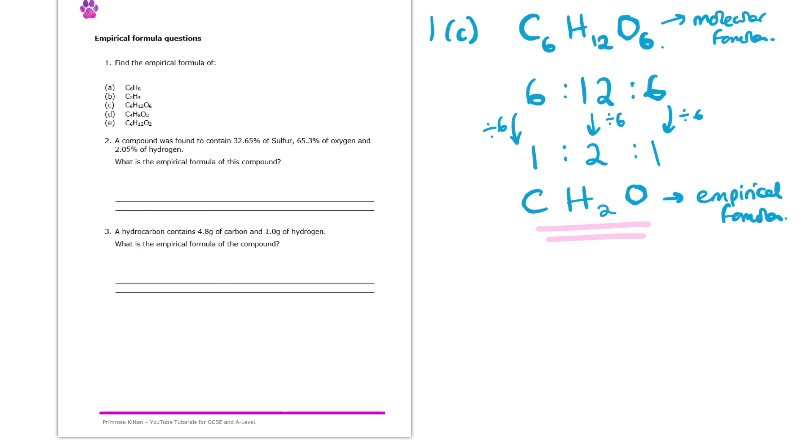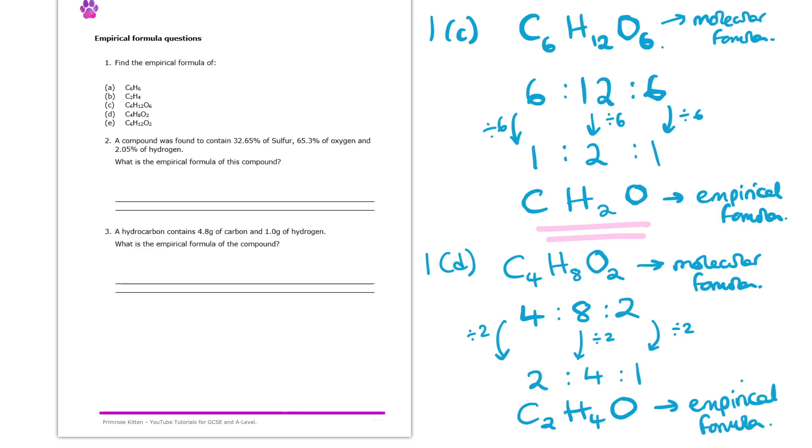Because that is the simplest whole number ratio of atoms in that substance. So for 1D now, we have another substance which is C4H8O2, and that is its molecular formula. So we know that substance has four carbon atoms, eight hydrogen and two oxygens. If we look at each of those numbers in the ratio, which is a four to eight to two ratio, we can see that there's a common factor again. This time that common factor is two. So that means if we look at each of these numbers, we can divide each of them by two. That leaves us with a two to four to one ratio. That is the simplest whole number ratio of atoms in this substance, which means the empirical formula will be C2H4O.